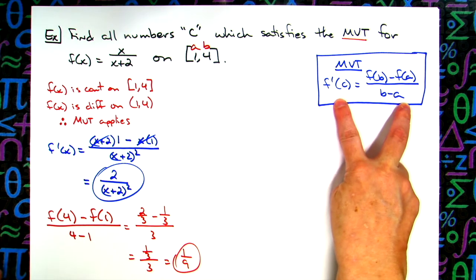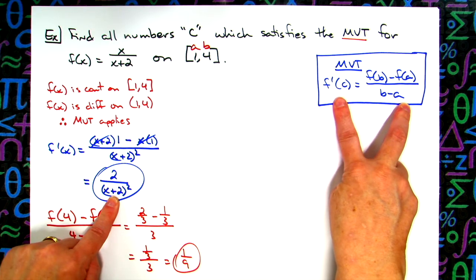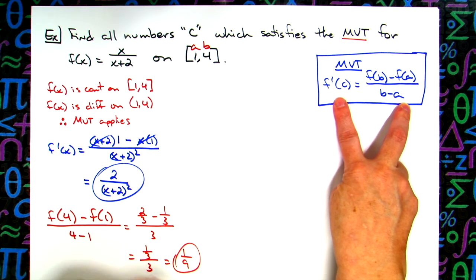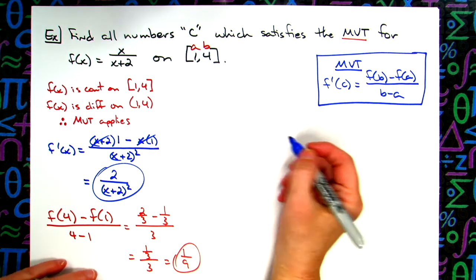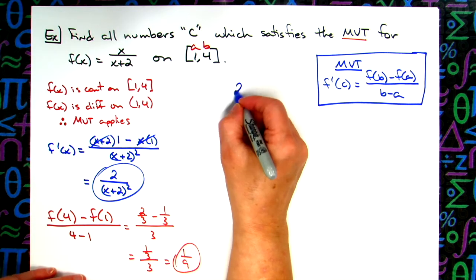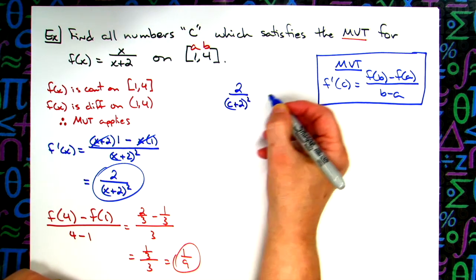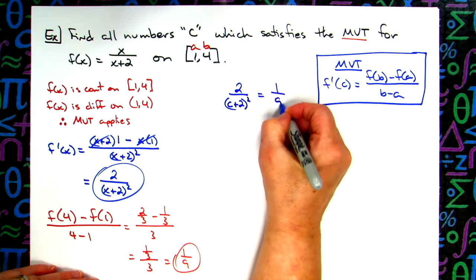I'm going to set these two things equal to each other. I'm going to take my derivative, plug a c into it, so that I have f'(c). I'm going to set that equal to 1/9. So I'm going to have 2 over (c+2)^2, set that equal to 1/9.